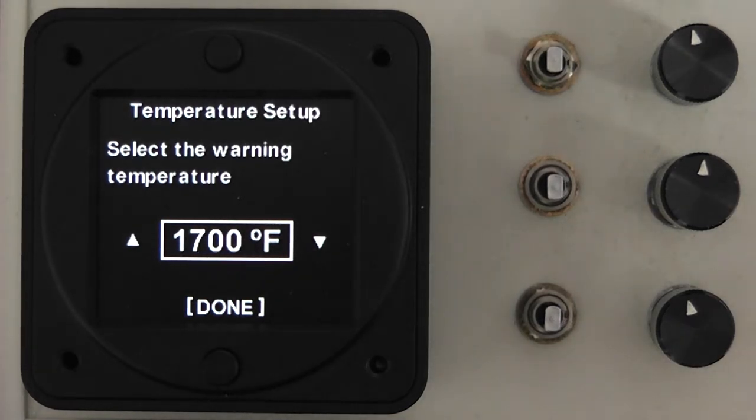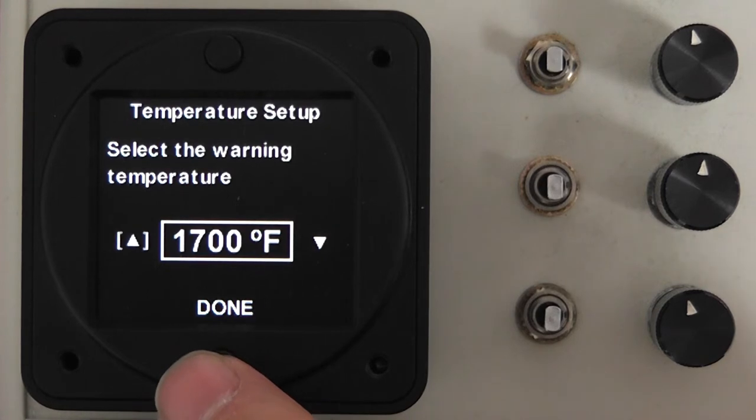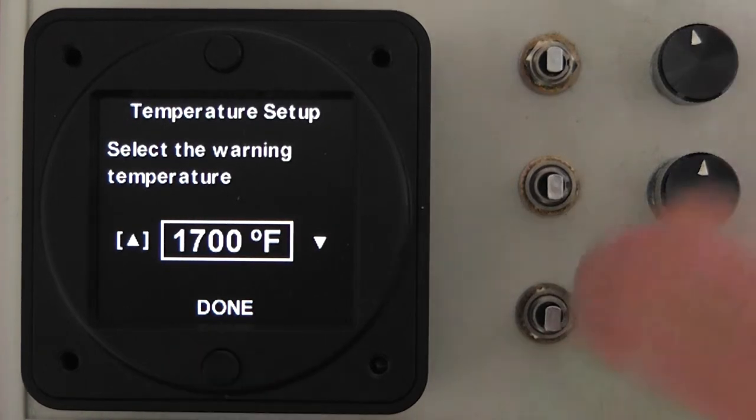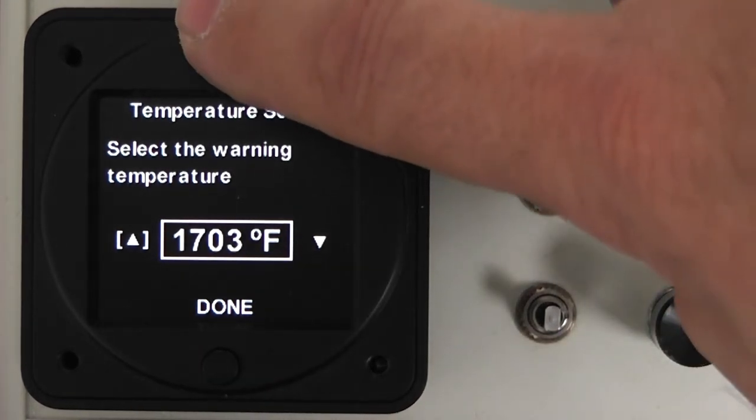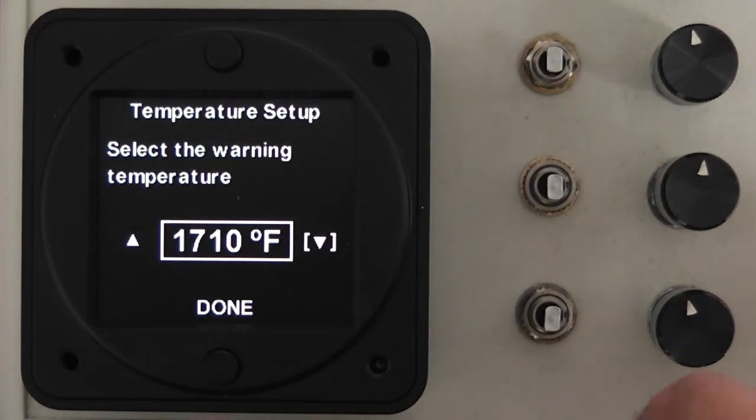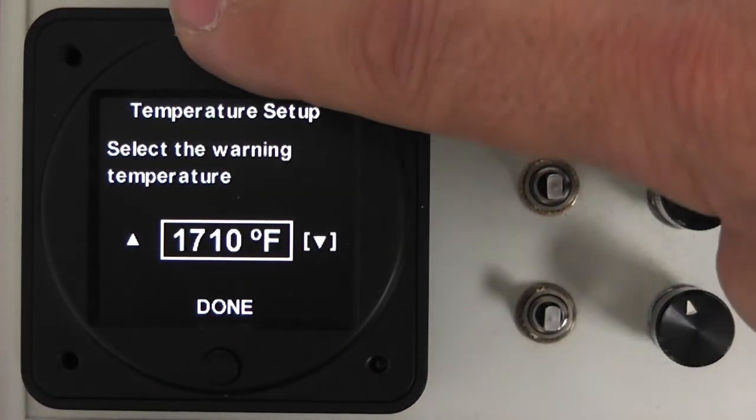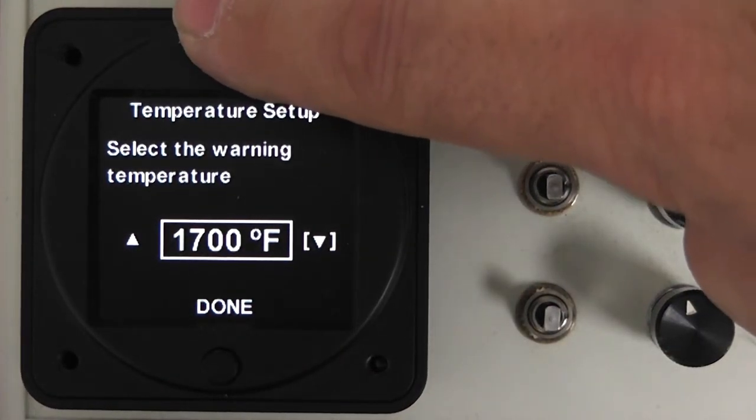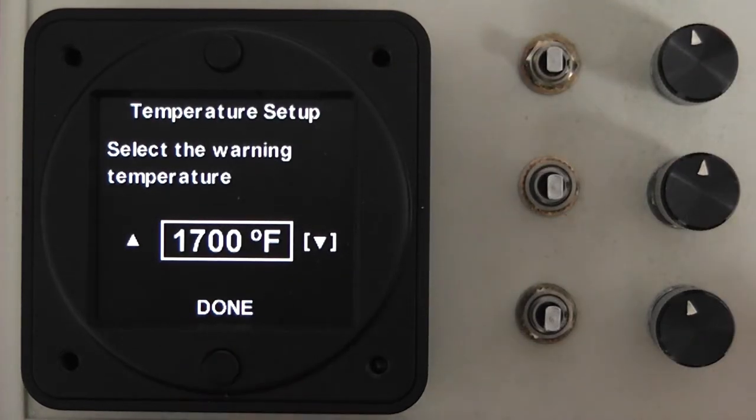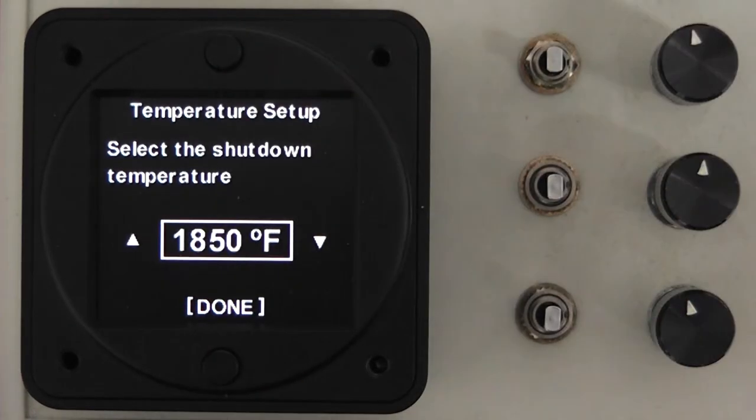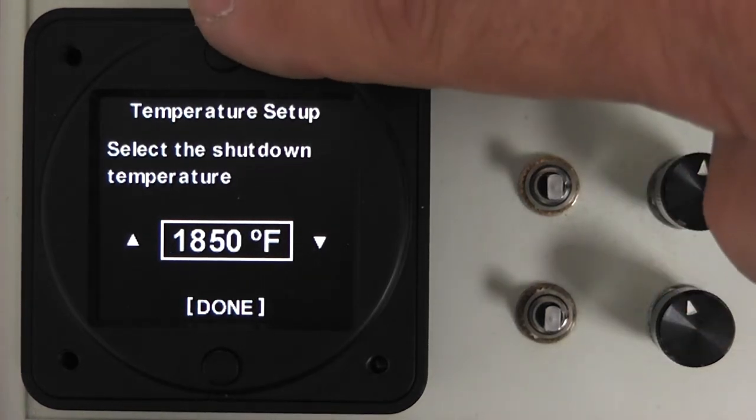The next function will be the temperature for the warning range. Again, the same procedure as previous, where you can select either the up or, if you have gone too far or want to reduce the temperature, the down function. We will leave this at 1700 degrees and select done, and exactly the same function for the shutdown temperature.